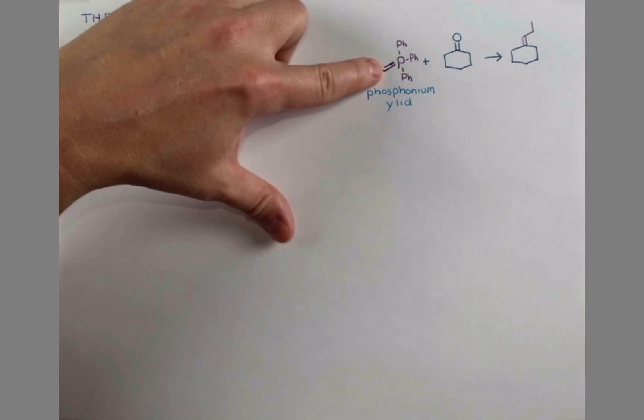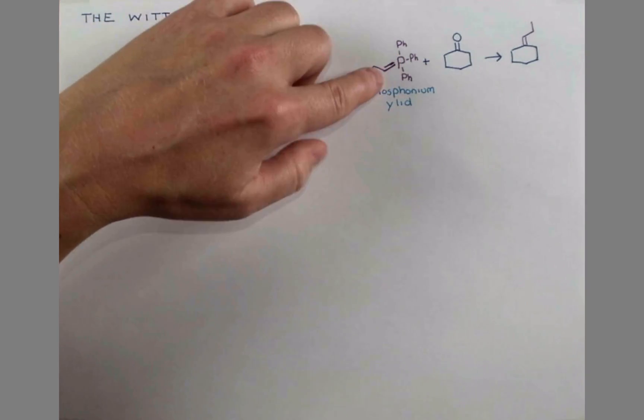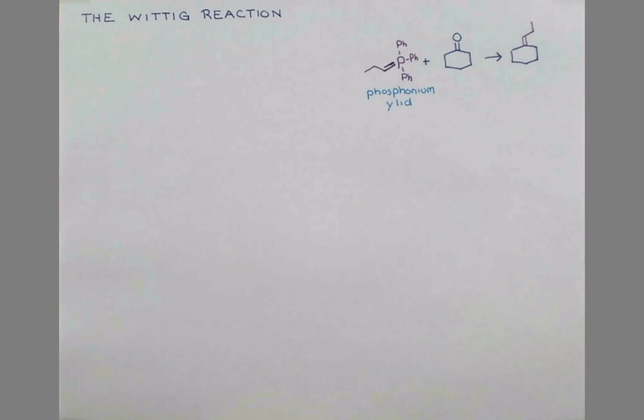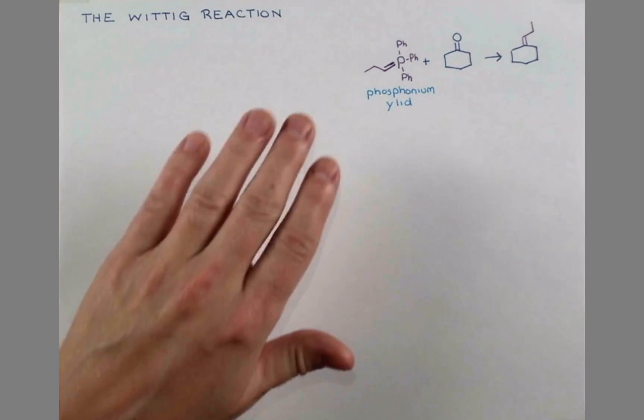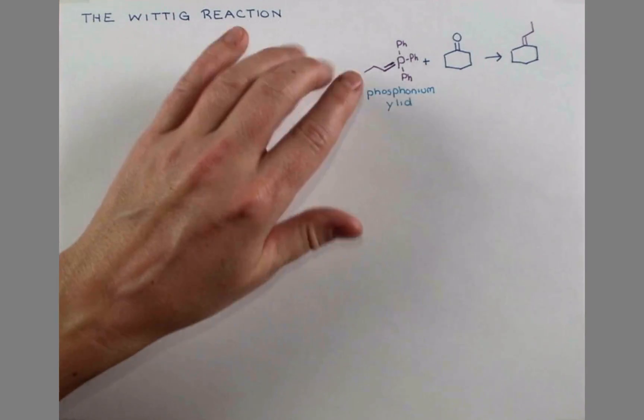Here we're double bonded to a carbon, so carbon has one, two, three bonds and an implied hydrogen, so four bonds, and everything looks neutral in this form.